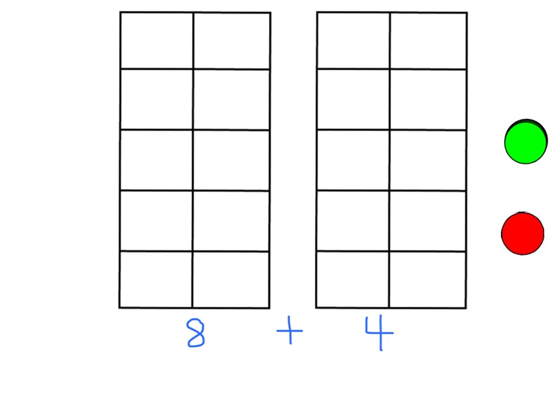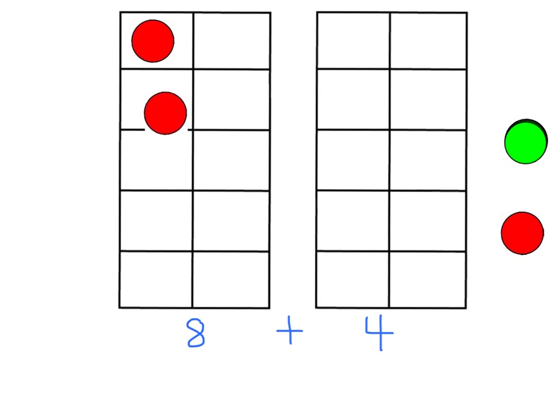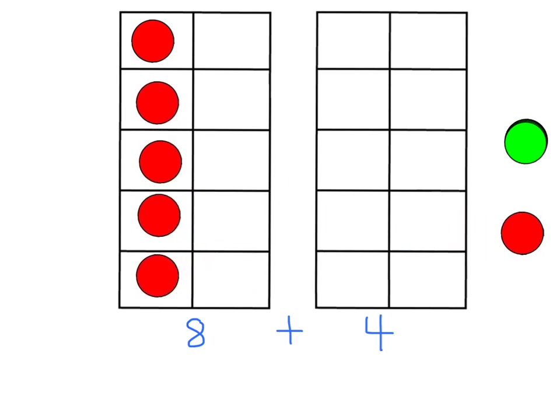Let's look at another number sentence where one of the parts is 8. We said in the beginning that we use the Make 10 strategy when one of the parts in a number sentence is 9, 8, or 7. So let's show 8 plus 4 on the 10 frame. We're going to have 8 red counters plus 4 green counters.